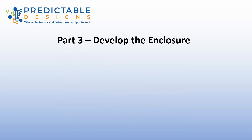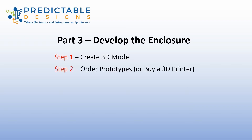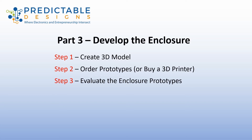Next, in part three, we're going to focus on the enclosure for your product. The first step is you're going to want to have a 3D model of your product's enclosure created. From that 3D model, you can then order prototypes, or in some cases, perhaps buy your own 3D printer to create your own prototypes. Once you get those prototypes back, you'll need to evaluate the enclosure prototypes and most likely make some changes for the next revision.